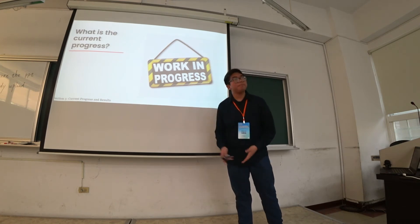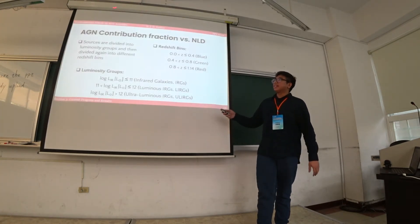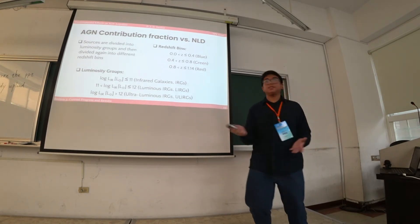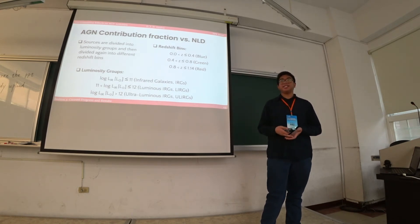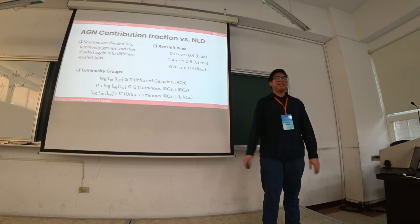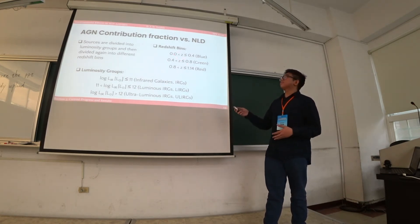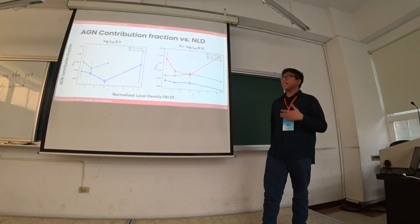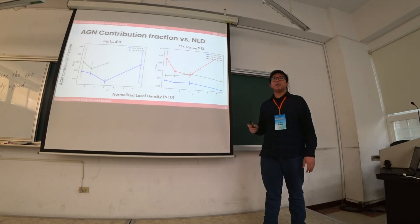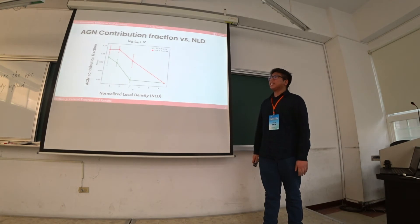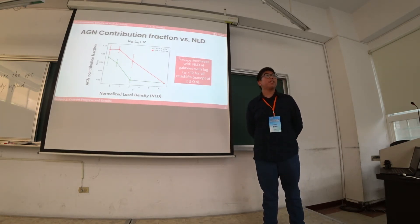I will now discuss the current progress of my ongoing research — comments are welcome. I divided the sources into different luminosity groups: infrared galaxies, luminous IRGs, and ultra-luminous IRGs. I also divided them into different redshift bins, with sources ranging from redshift 0 to 1.14. As you can see, the contribution fraction versus normalized local density for sources with log L_IR ≤ 12 shows no clear correlation. However, the contribution fraction decreases with NLD when log L_IR > 12, for ultra-luminous infrared galaxies.